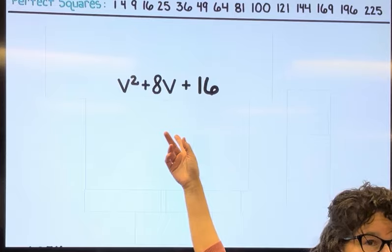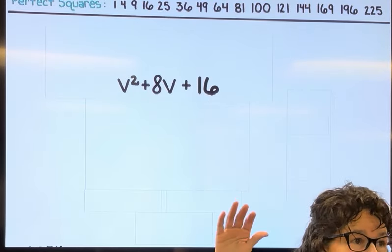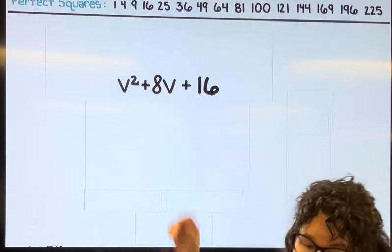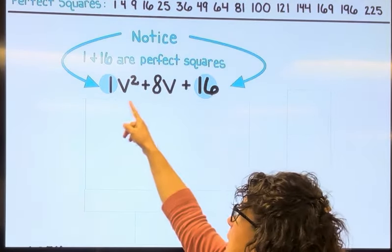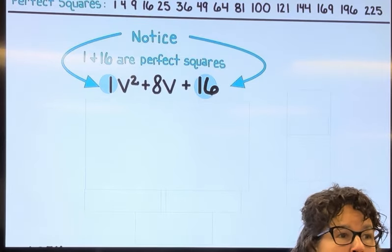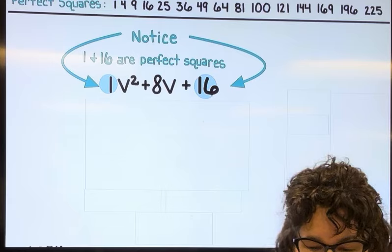We're still going to use the Big X method to factor, but the shortcut is going to happen because we notice that the numbers in front and the number at the back are perfect squares. 1 times 1 is 1, and 4 times 4 is 16.